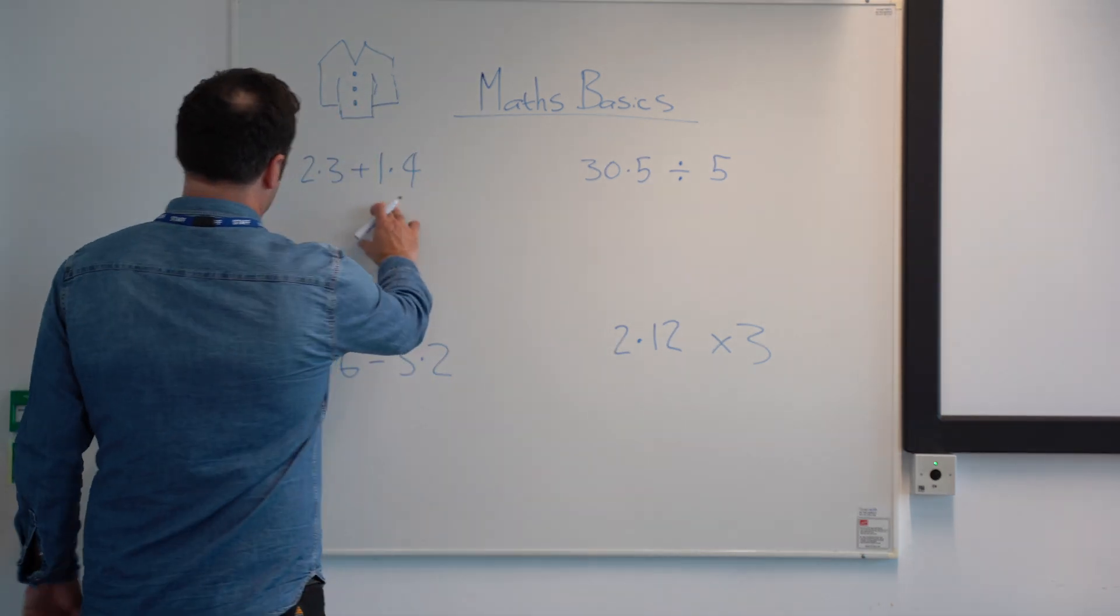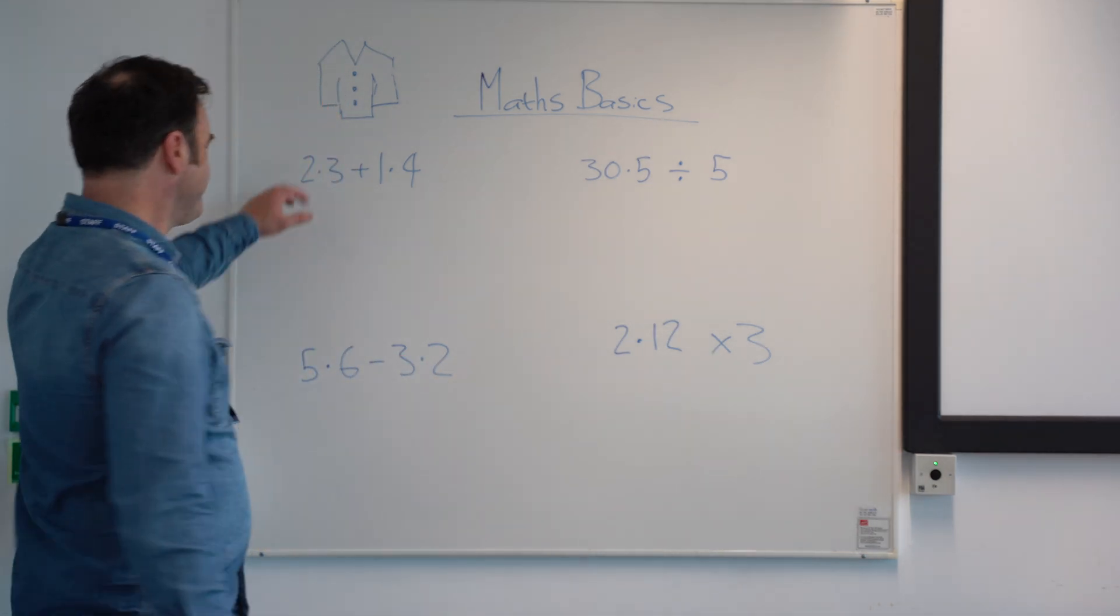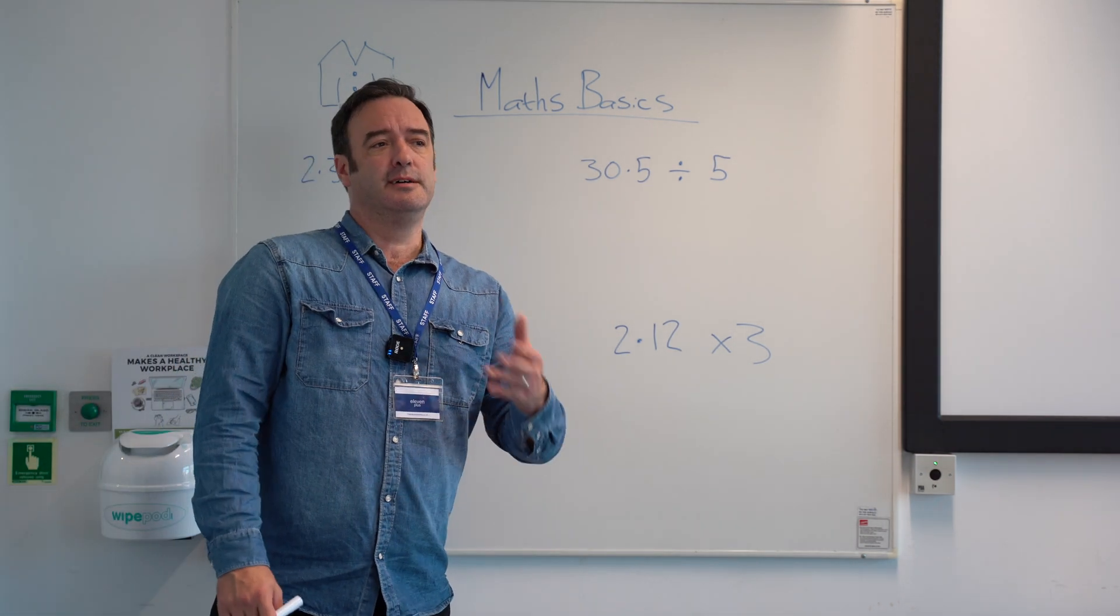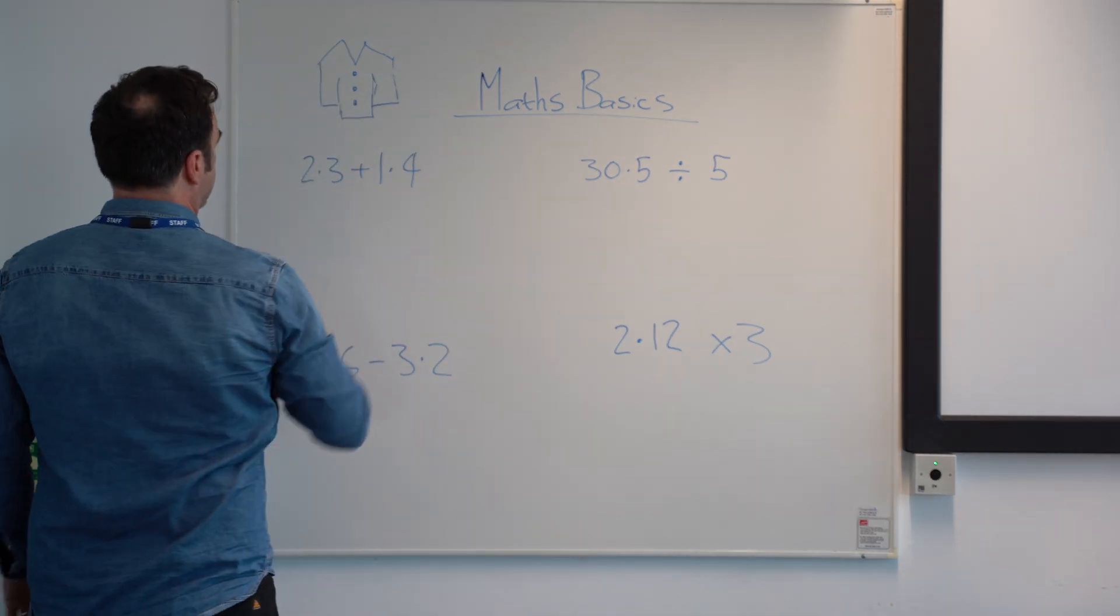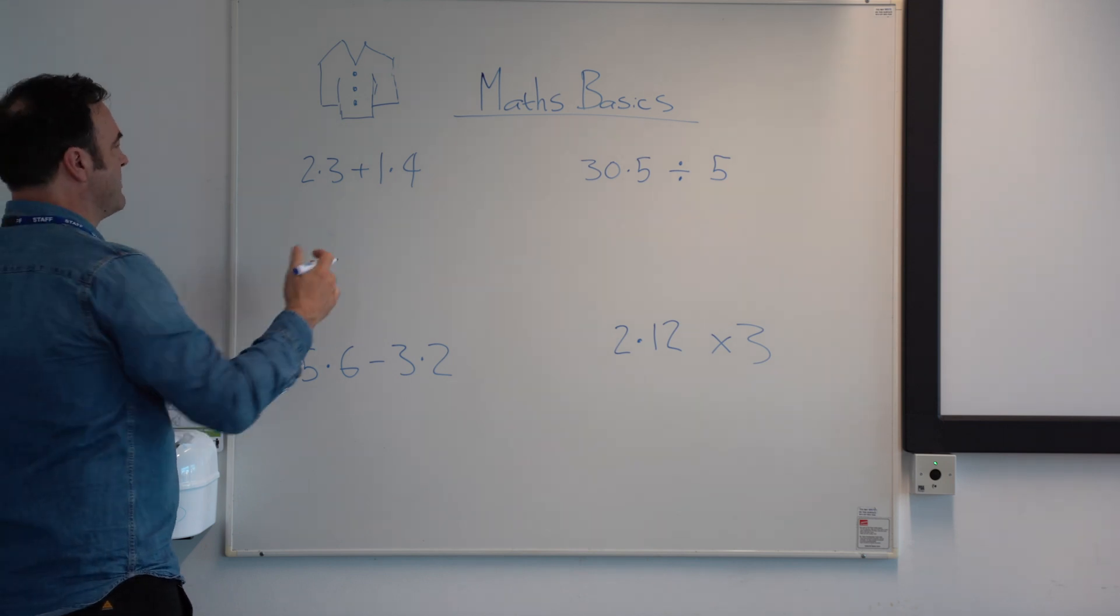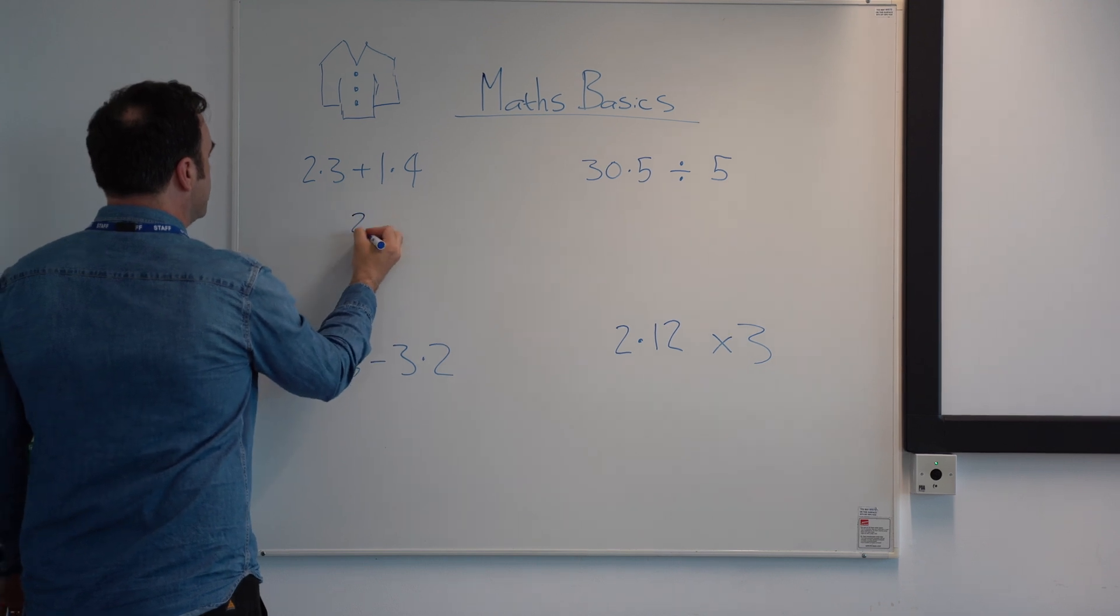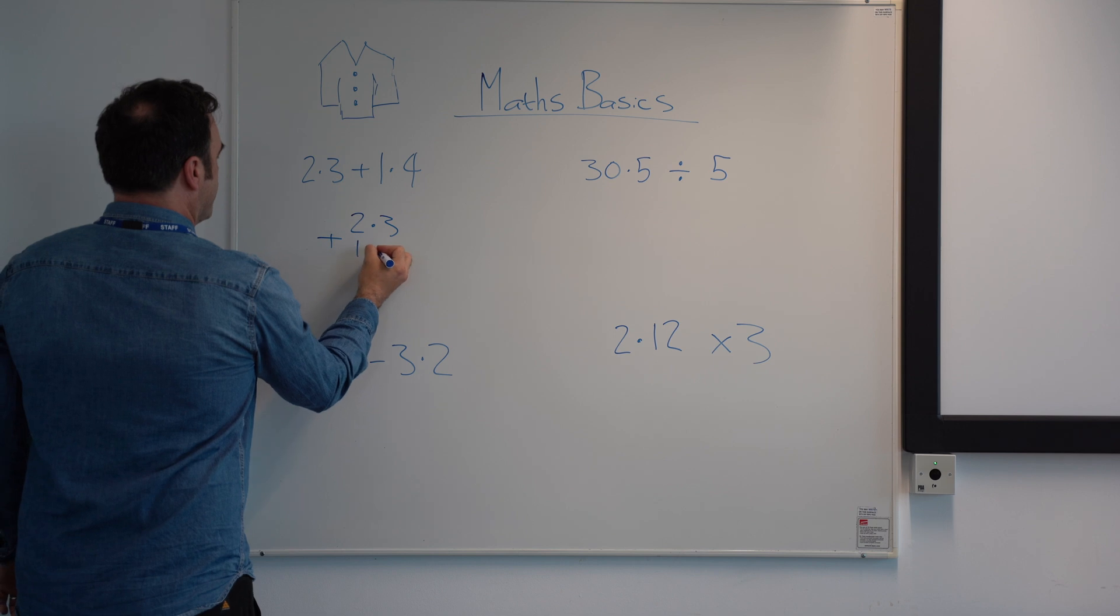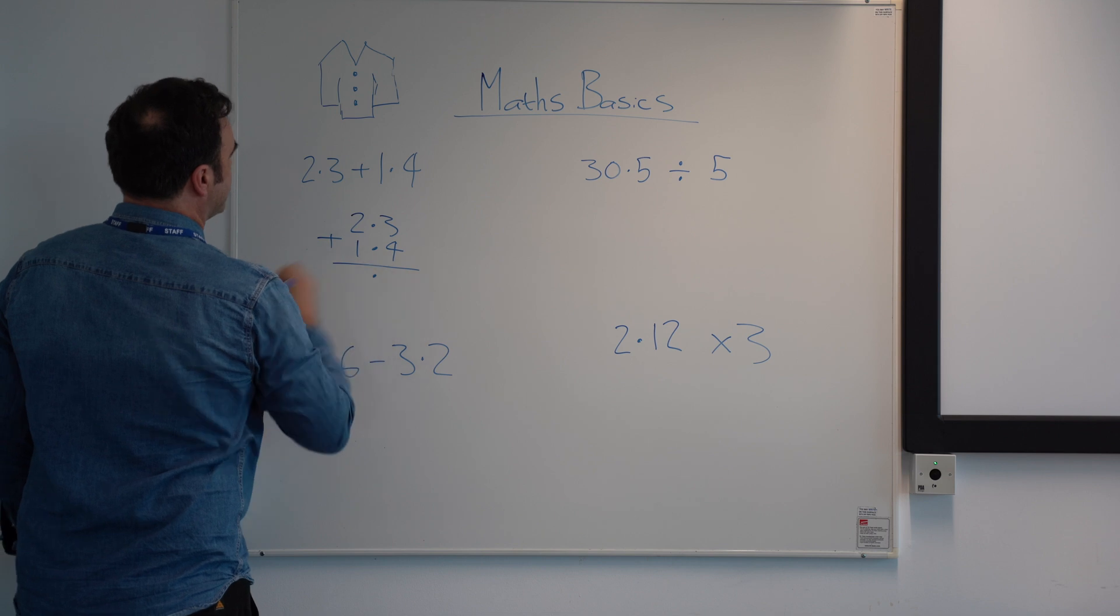So for add and subtract it's actually really easy to help children remember what to do. I always tell children to think about a shirt and the buttons going down and they line up exactly one above the other. So if we look at 2.3 plus 1.4, the main thing that a kid has to remember is that you line it up using a decimal point and you never deviate from that. So 2.3 plus 1.4 and then you continue the decimal point down into the answer.